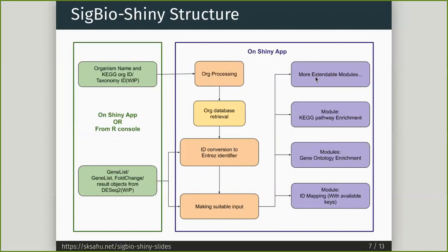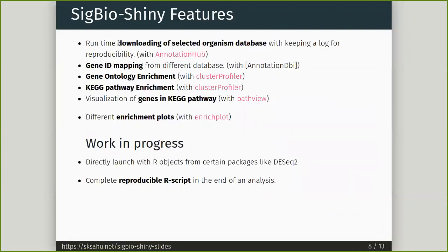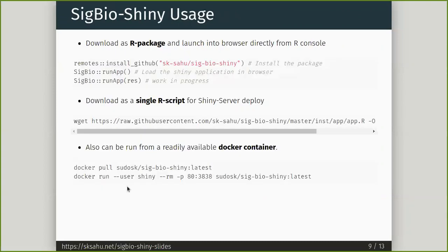Some of the features include downloading the selected organism from the database, gene ID mapping, Gene Ontology enrichment, genes in the KEGG pathway enrichment with plots. A few things are still a work in progress, like directly launching from a DESeq2 object and generating a reproducible R script.